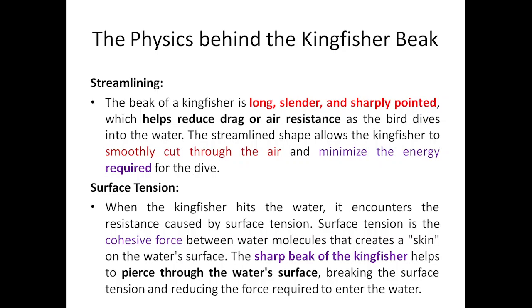The streamlined shape allows the kingfisher to smoothly cut through the water and minimize the energy required for the dive. Because of this, drag reduction in the air is less, so it can smoothly dive and minimize the energy required. The same property is copied for the bullet train as well.